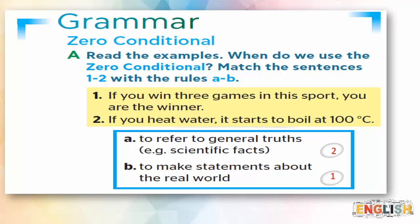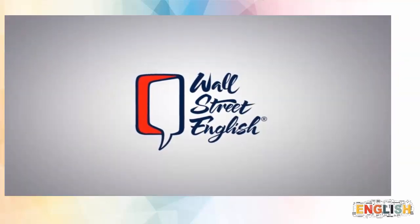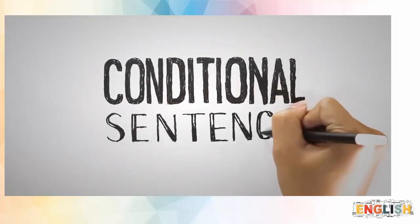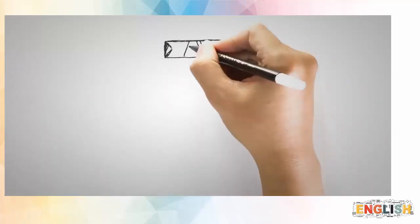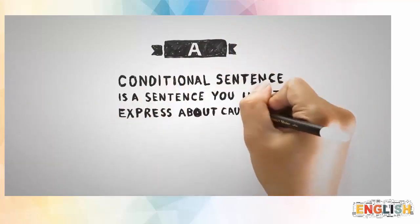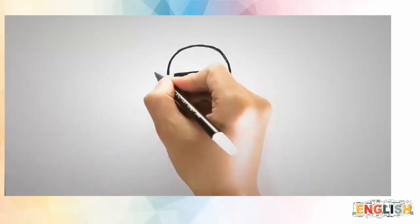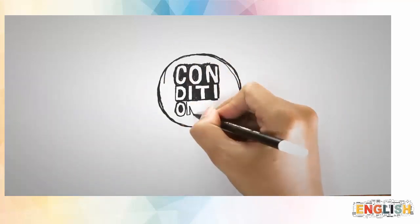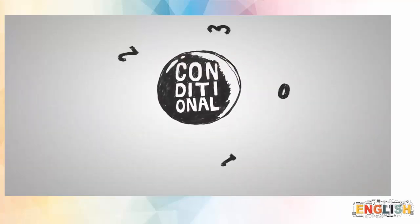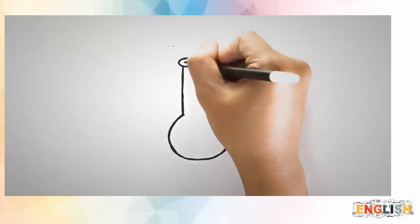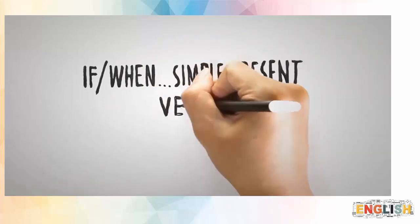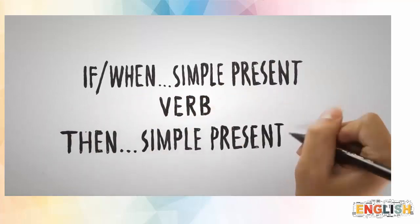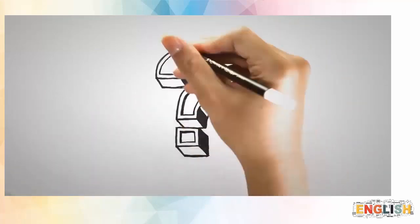What is a conditional sentence? A conditional sentence is a sentence you use to express a cause and effect. There are many types of conditionals, but the first one we will learn here is the zero conditional. The formula is: if or when — simple present verb — then simple present verb.